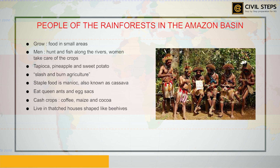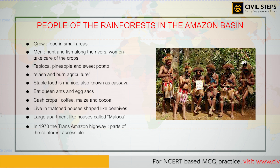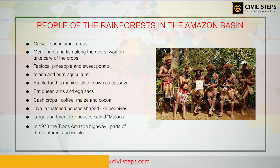The rainforests provide a lot of wood for houses. Some families live in thatched houses shaped like beehives, while others live in large apartment-like houses called maloka with a steeply slanting roof. In 1970, the Trans-Amazon Highway made all parts of the rainforest accessible. Developmental activities are leading to the gradual destruction of the biologically diverse rainforest.